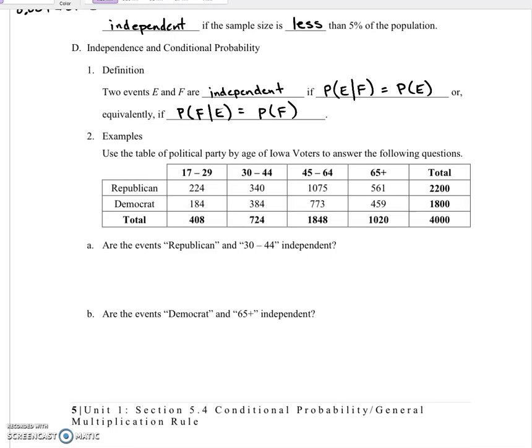So let's use this table of political party by age of Iowa voters to answer the following questions. Are Republican and 30 to 44 years old independent? Well, we need to see if the probability of Republican given 30 to 44 is the same as the probability of Republican. So let's calculate the probability of Republican given age 30 to 44.